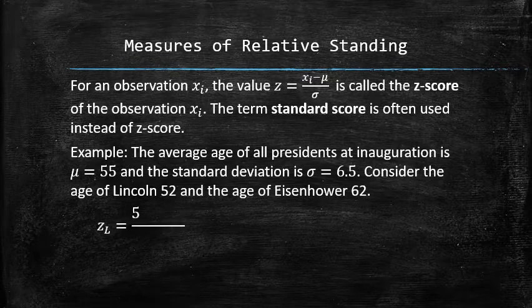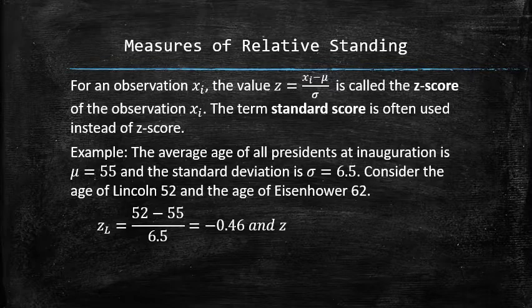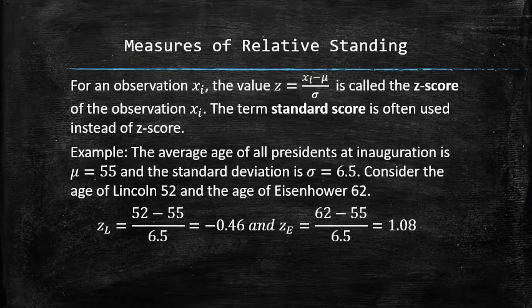The z-score of Lincoln can be computed using the formula and is equal to negative 0.46, and the z-score of Eisenhower can also be computed using the formula and is equal to 1.08.